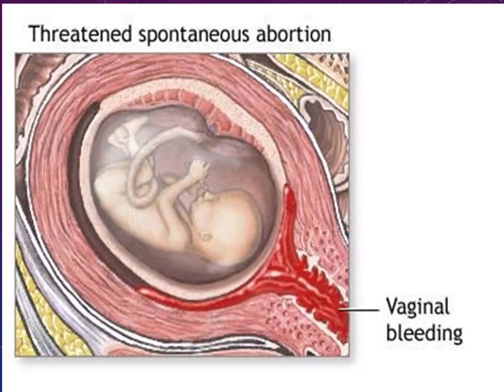Threatened abortion is basically a type of spontaneous abortion — spontaneous means the abortion which happens by itself, without being induced medically. From the name 'threatened,' what do we understand? Threatened means there is a fear of abortion happening. There are chances that the abortion can happen but it has not yet happened. The symptoms show that abortion can happen anytime, but you still have time to save the baby.